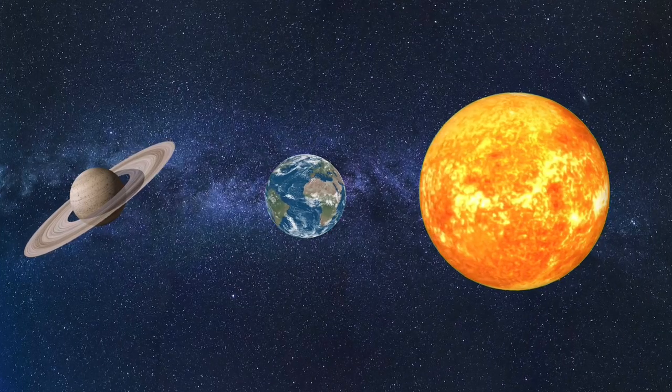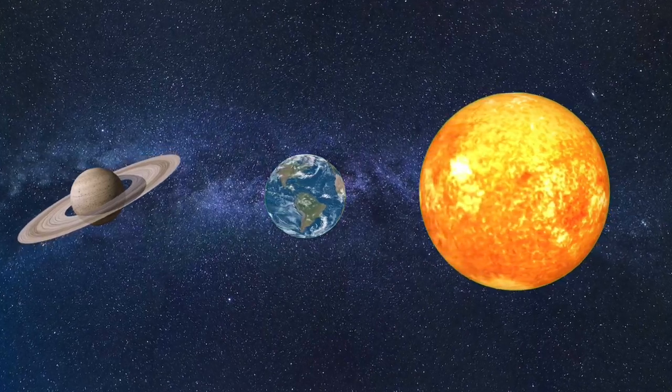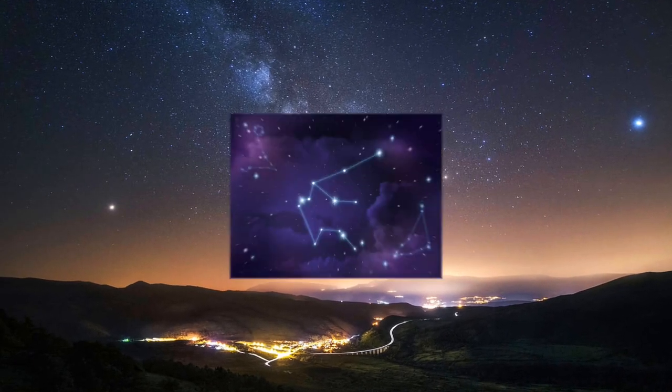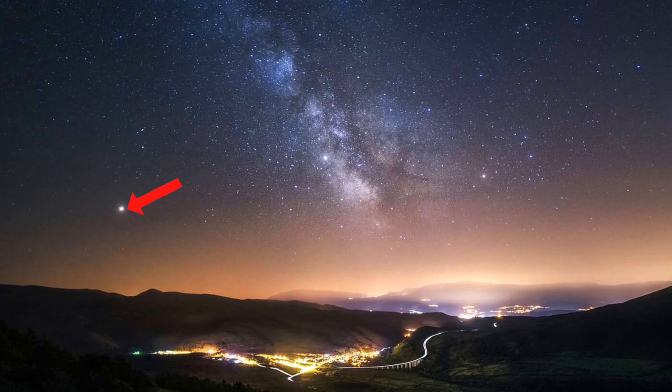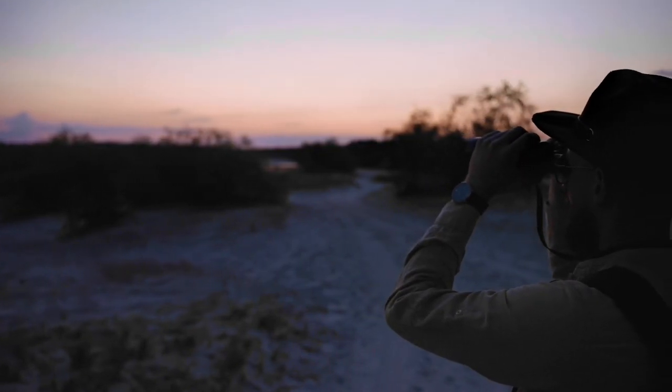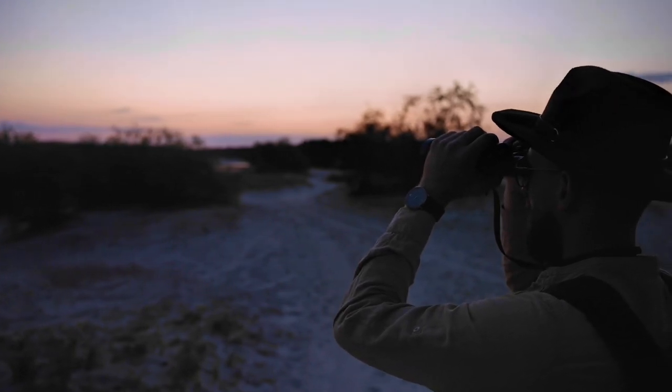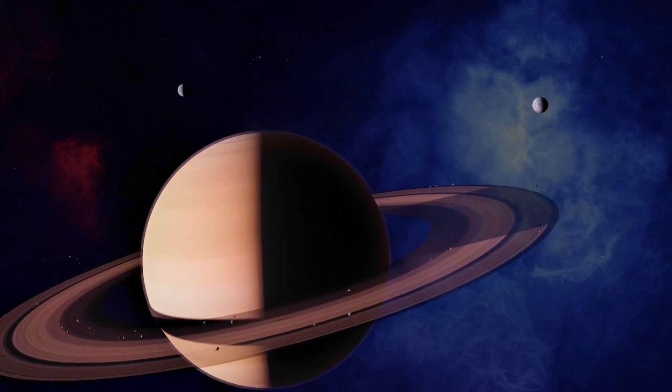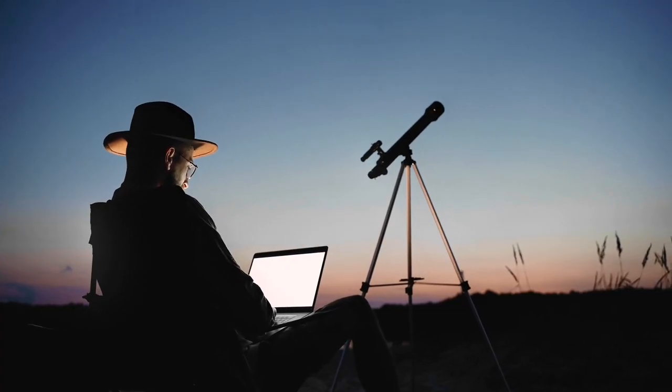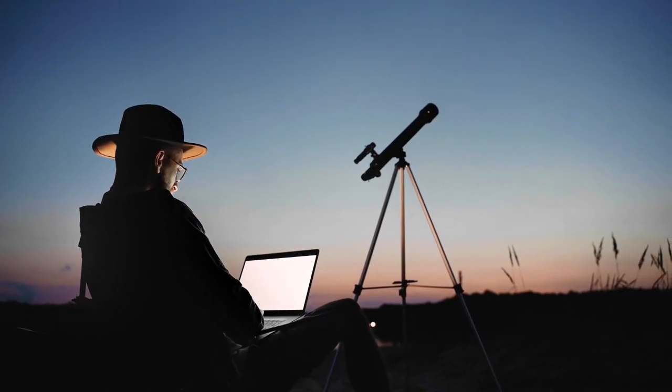On August 27th, Saturn will reach opposition to the Sun. The ringed planet will be located in the constellation Aquarius, looking like a yellowish dot to the naked eye. It's brighter than at any other time of the year and is visible throughout the night. This is the best time to observe and photograph Saturn and its rings. This is almost the maximum inclination they can have so you can clearly observe them.